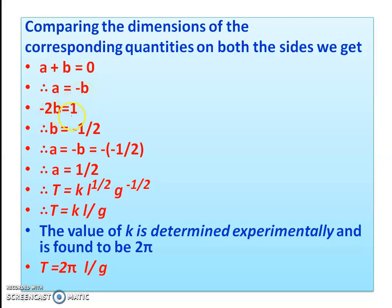From a plus b equals 0, and b equals minus one half, we get a equals one half. Therefore the formula becomes T is equal to k times L raised to one half times g raised to minus one half, which gives T equal to k times the square root of L upon g.